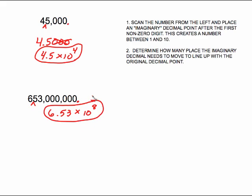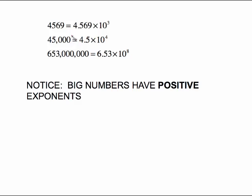Maybe you've noticed something about the last three examples. Every one of these has a positive exponent, and the reason is because we started with big numbers. So big numbers have positive exponents. That's one little thing you can do to check whether you've got the right exponent — big numbers have positive exponents.